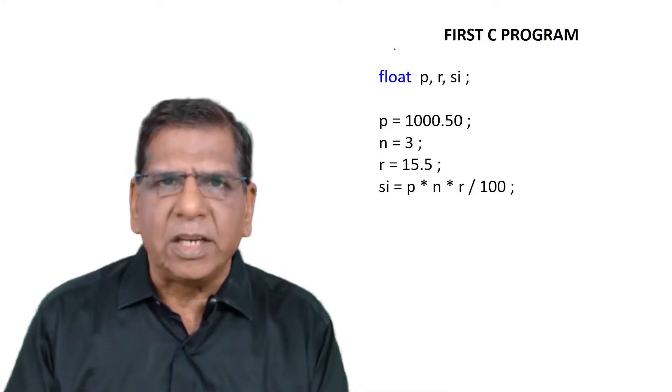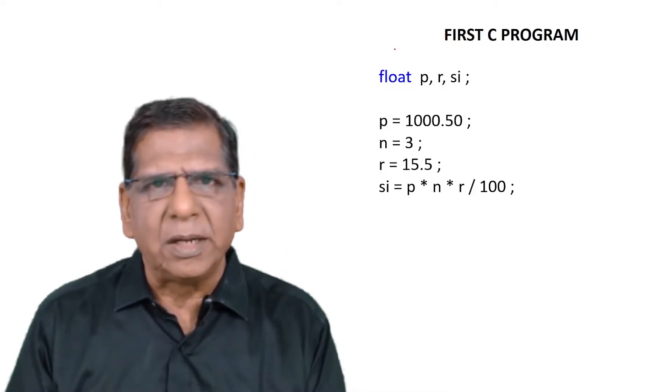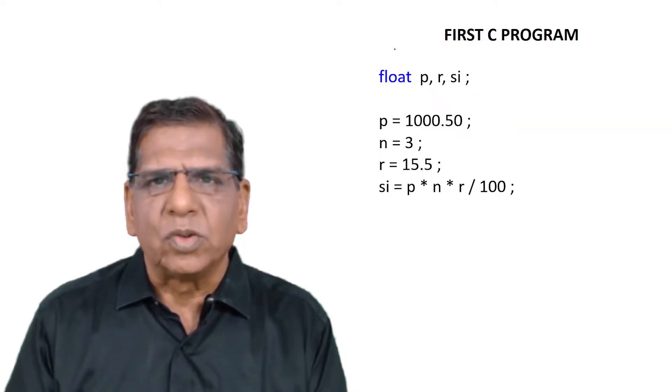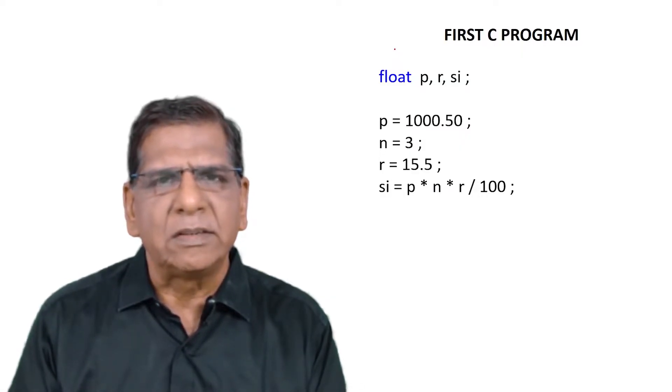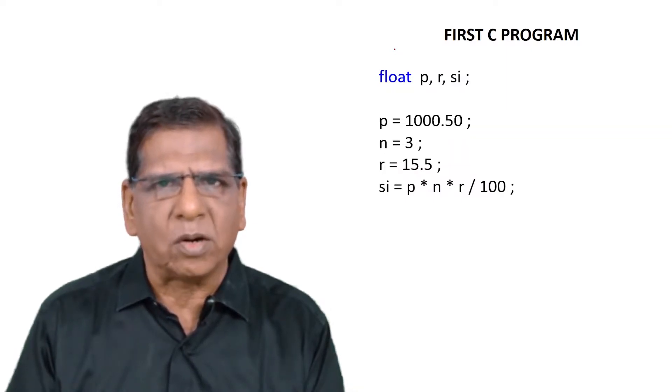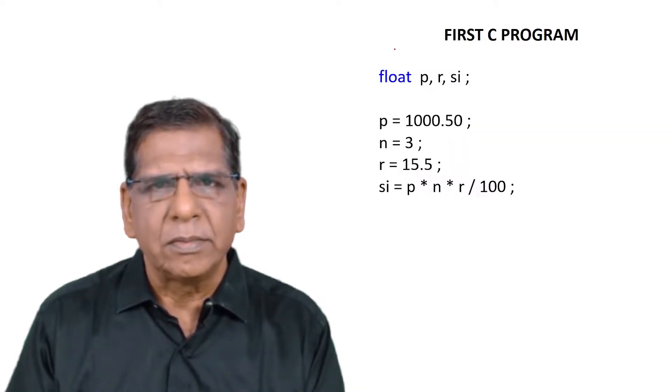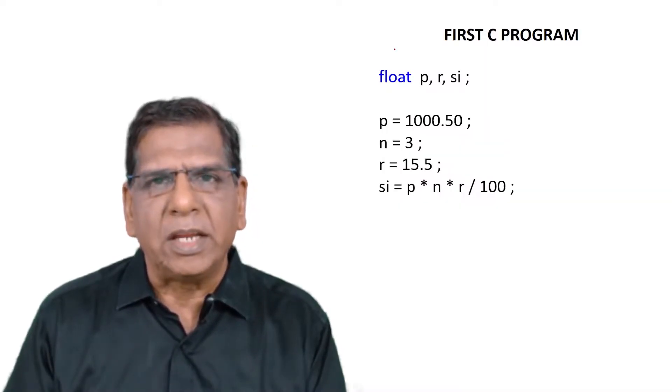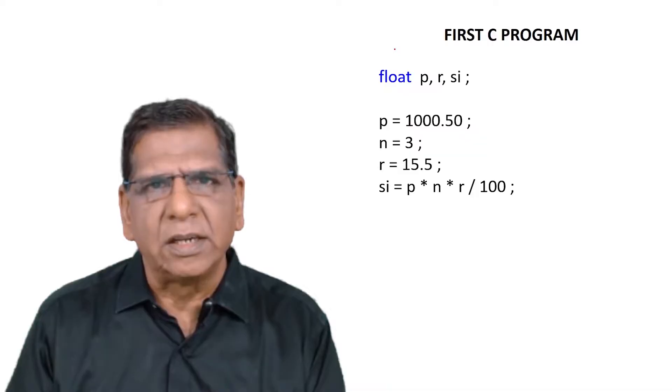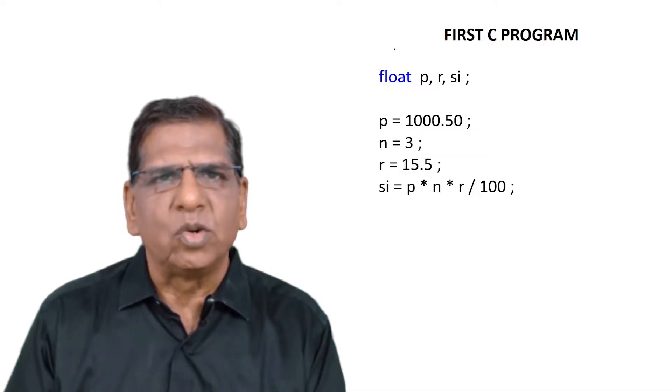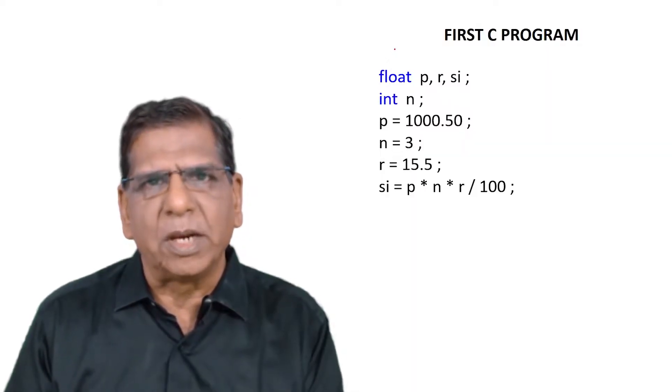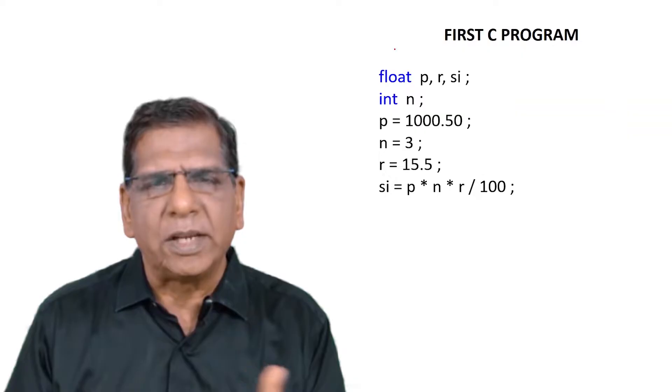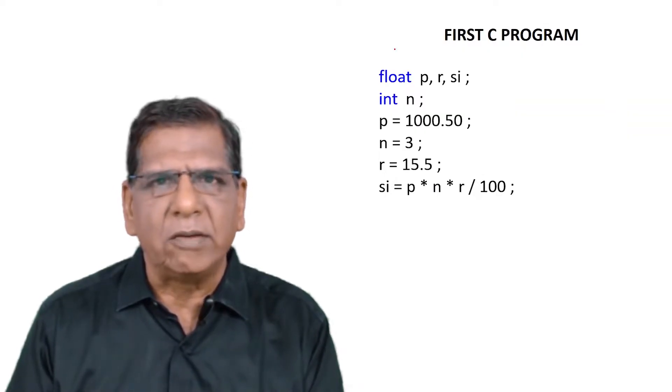Now every single variable we use in a program needs to be declared at the beginning. So three variables P, R and SI are likely to have a floating point value or a float value in them, hence declare them at the beginning by saying float P comma R comma SI. Unlike them, the variable n is going to hold a value 3 which is an integer, hence we should declare n to be an integer variable. Note that a float variable can hold a real value or a float value whereas the int variable will hold only an int value.